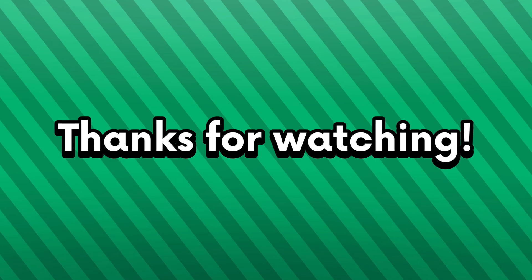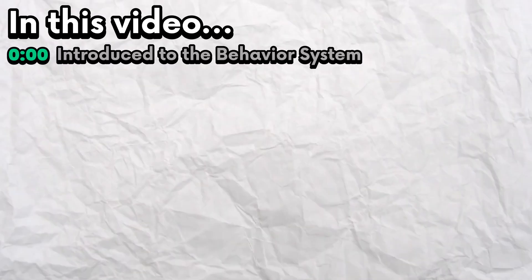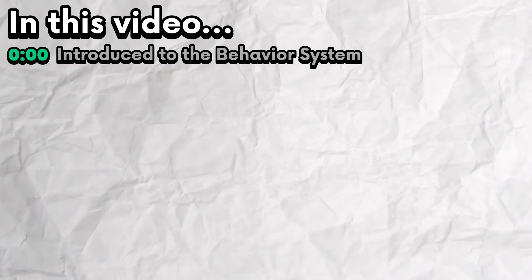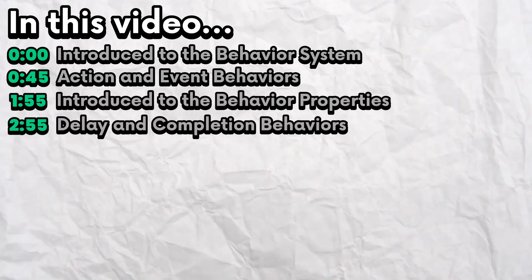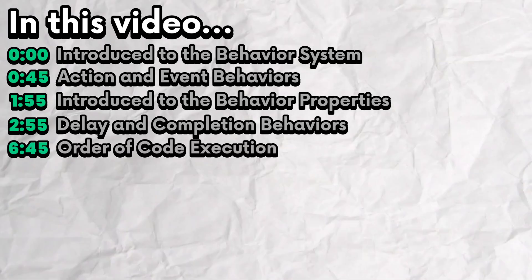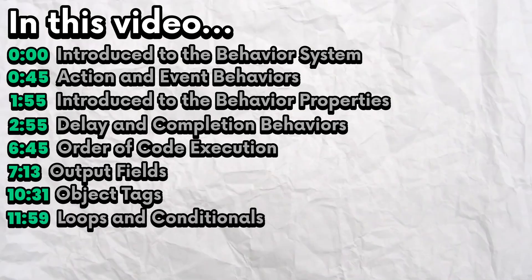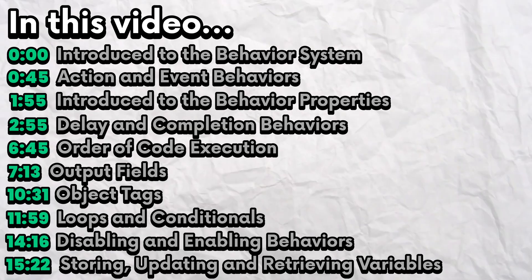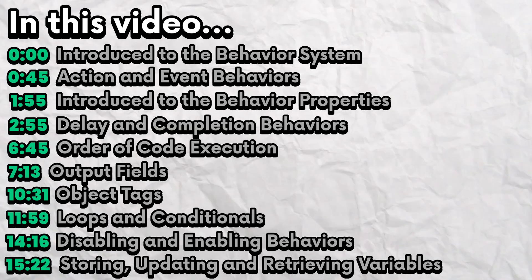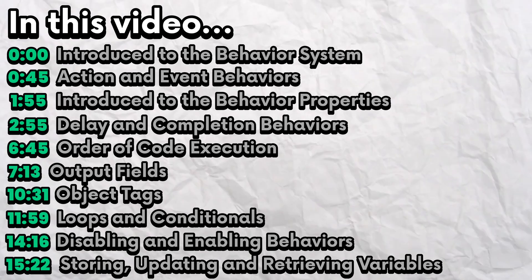That concludes this video. We went over the basics of Hyperpad's visual coding system, including the behavior system, action and event behaviors, how to edit a behavior, delay and completion behaviors, order of code execution, output fields, object tags, loops and conditionals, disabling and enabling behaviors, and variables. I hope you enjoyed this rundown of Hyperpad's visual coding system — hopefully you can use what you gained to make some amazing projects. Thanks for watching!